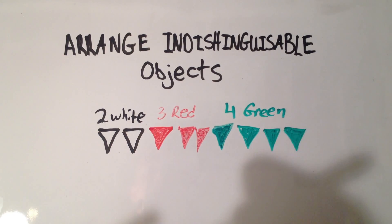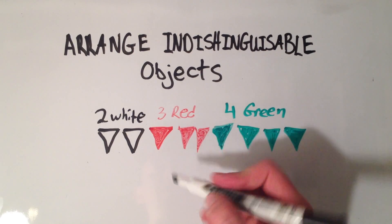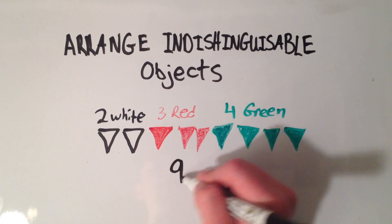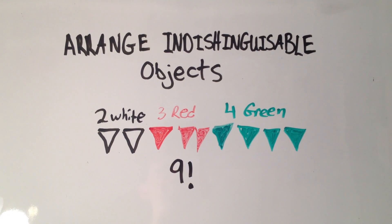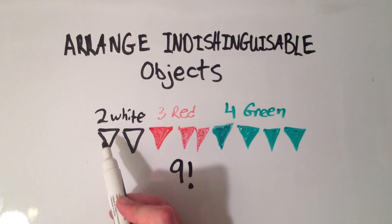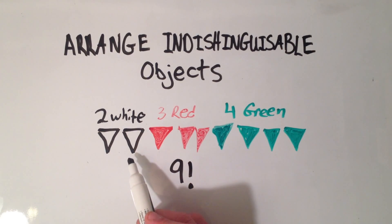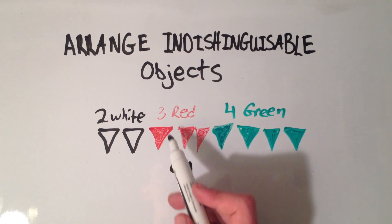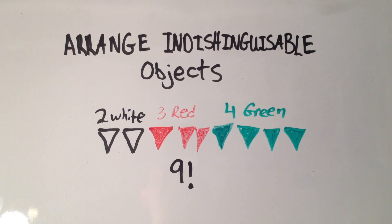Normally what we would do is say we have nine objects, and that means there are nine factorial ways to arrange them. Because in the first place you would have nine choices, in the second place you would have eight choices, in the third place you would have seven choices, and so on. But that's when the objects were distinguishable — you could tell them apart.